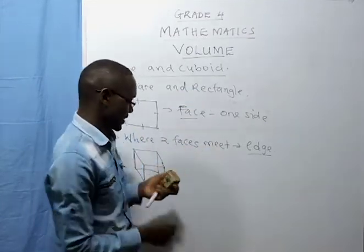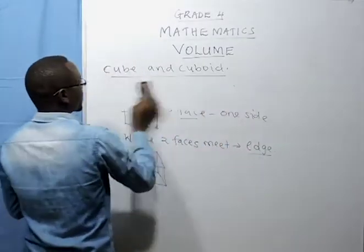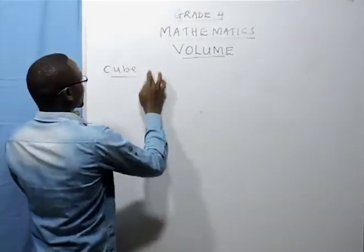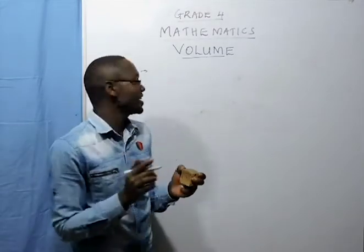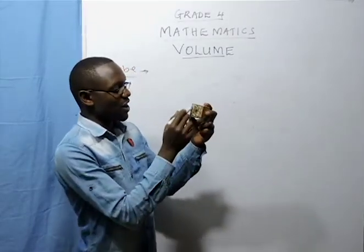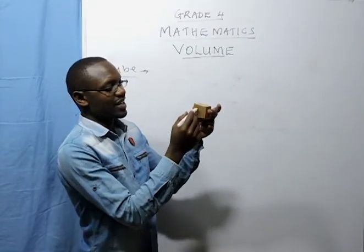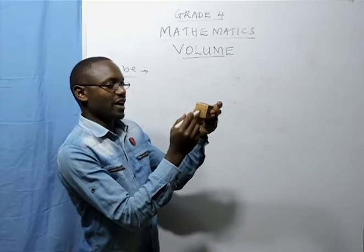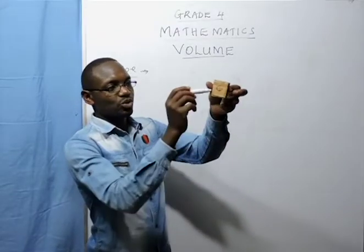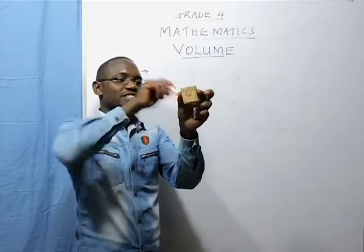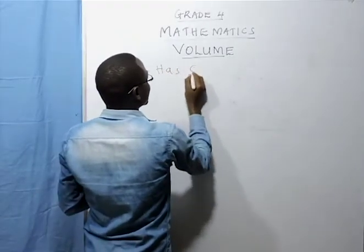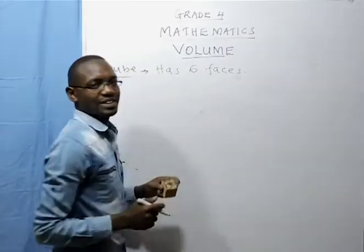So how many edges does a cube have? When we look at a cube, we are identifying cubes and cuboids. A cube — we say that it has how many faces? One side of a cube is what we call a face. So let us count: we have one on this side, two, three, four. Then we have five and six on the other side. So a cube has six faces.